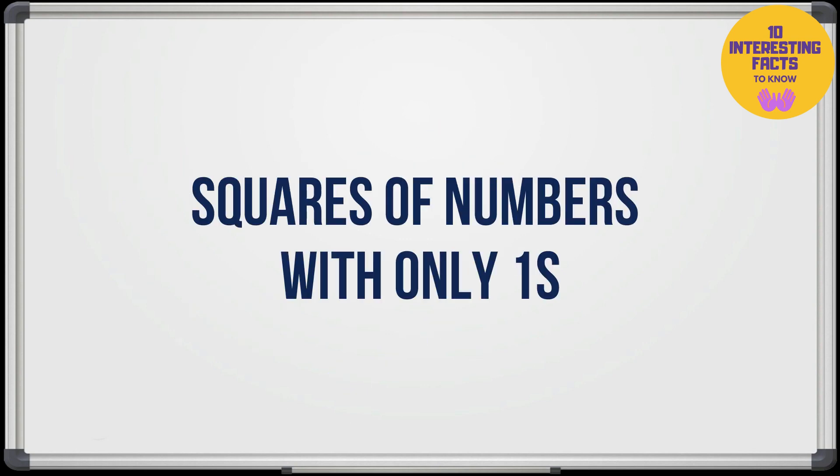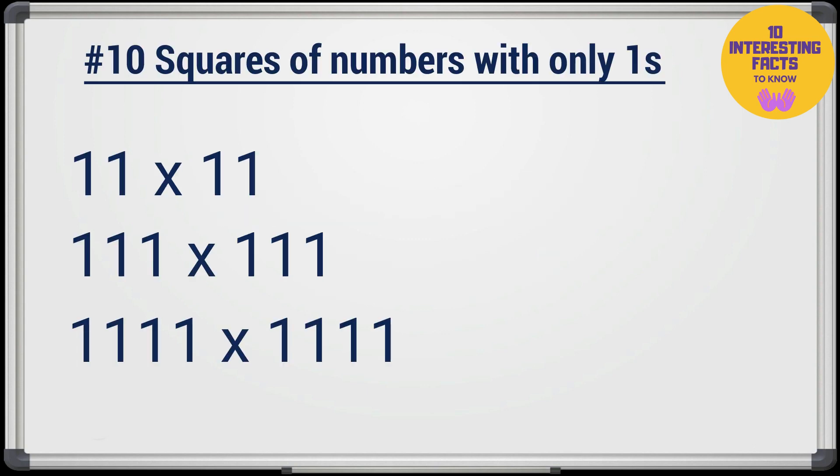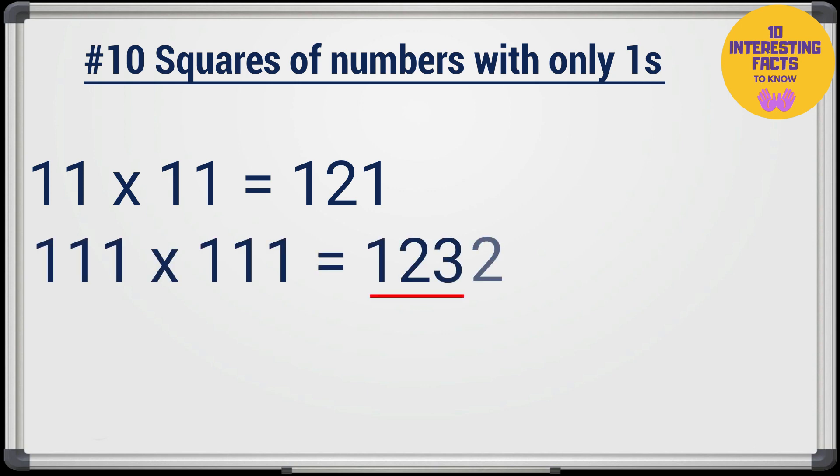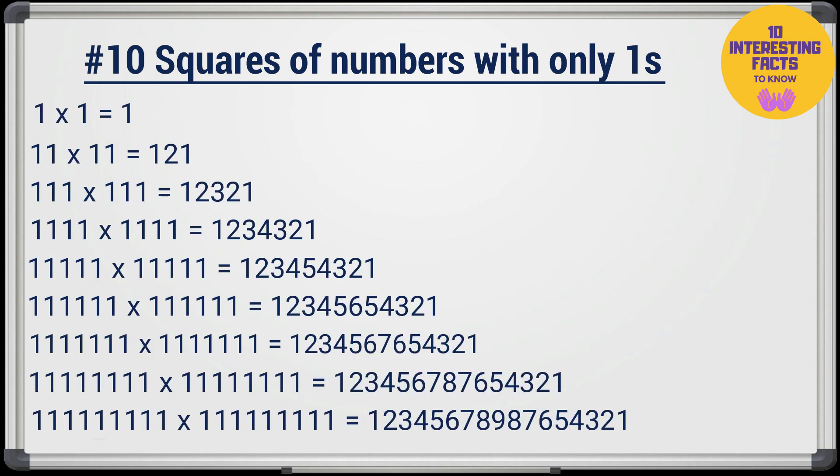And the next one is squares of numbers with only ones, like 11 times 11, 111 times 111 and so on. This one is very interesting. 11 times 11 is 121. 111 times 111 is 12,321. And look at the rest.